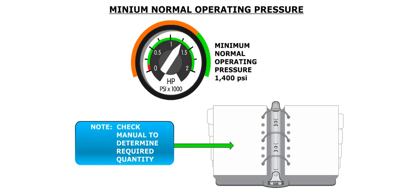The minimum pressure required for normal operations is 1,400 psi. Flights may be conducted with pressures below this value, but you must consult your flight crew operating manual to determine the required quantity for the intended flight.